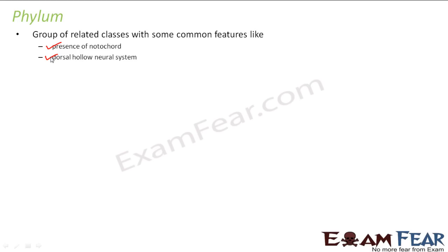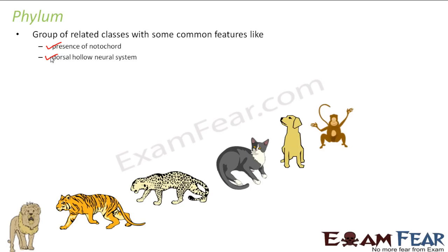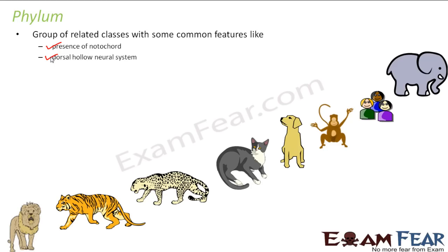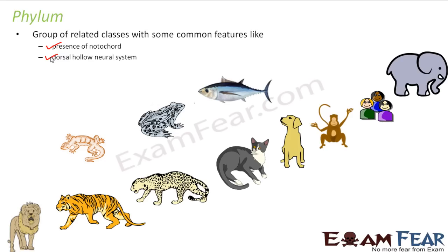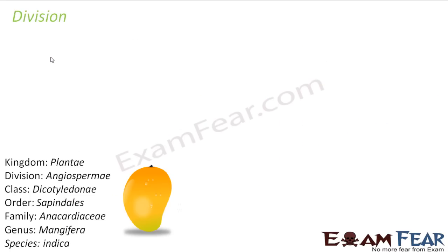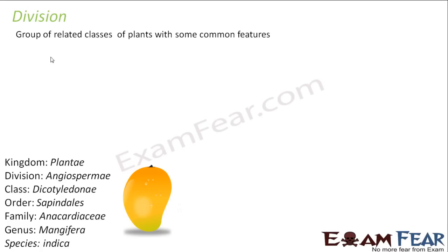The word phylum is used only for animals. We do not use the term phylum for plants — for plants we use a different term called division. So along with mammals, we can now include other organisms like fishes, reptiles like lizards, amphibians, or snakes, because even though they don't all fall under class Mammalia, they all fall under the same phylum. Phylum and division mean the same thing — phylum is used for animals and division is used for plants.